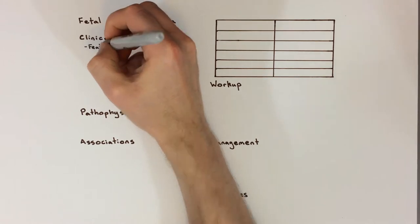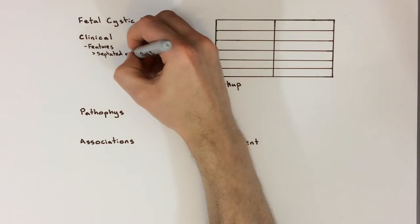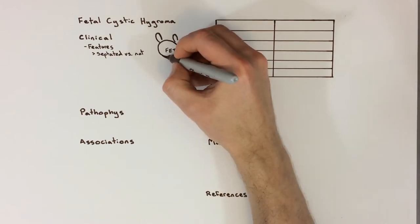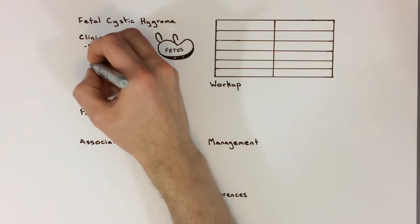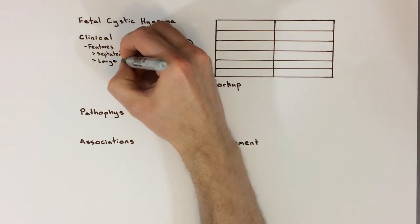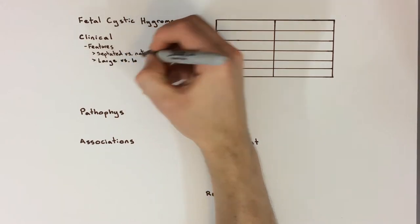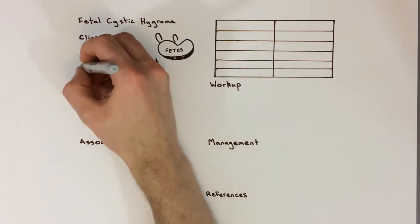Cystic hygromas are usually identified by routine ultrasound near the end of the first trimester, or sometimes during the beginning of the second trimester. A classic cystic hygroma is septated, meaning it has internal divisions, and involves the length of the fetus from head to rump. Smaller cystic hygromas happen too, which most often just involve the neck, and some cystic hygromas may be non-septated, or simple.